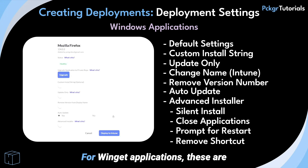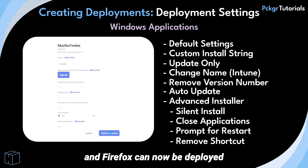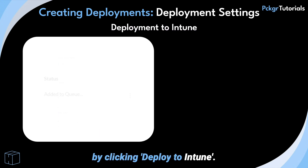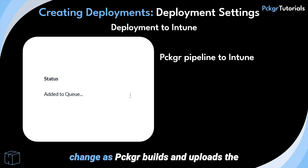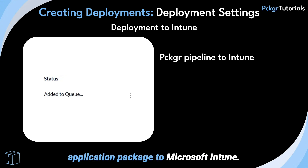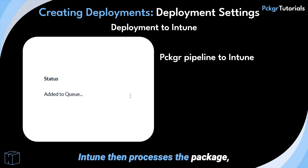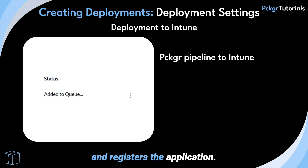The Firefox shortcut on the user's device can be removed by altering the Remove Shortcut option. For Winget applications, these are the deployment setting options, and Firefox can now be deployed by clicking Deploy to Intune. The status of the application will change as Packager builds and uploads the application package to Microsoft Intune. Intune then processes the package, verifies the install settings, and registers the application.